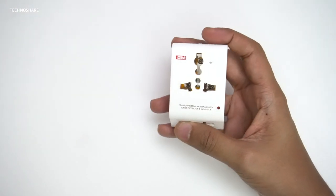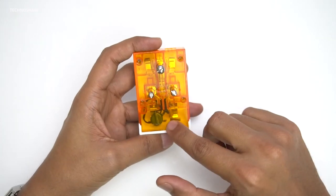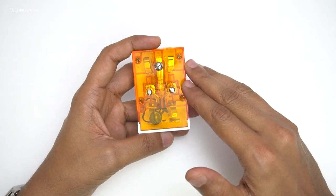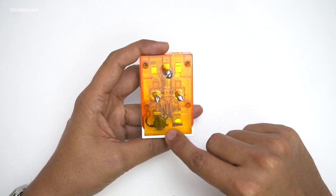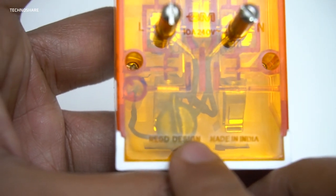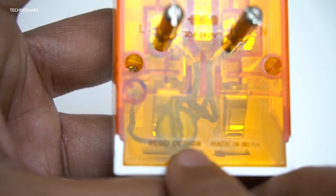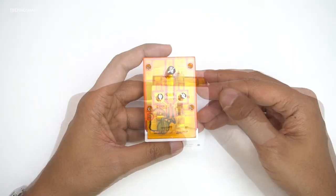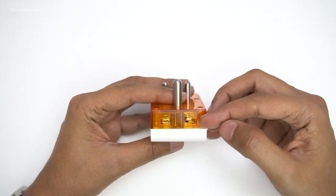The build quality again looks impressive. The back is transparent and you can see that it has got a built-in surge protector here - this is a varistor that I just explained earlier. This will offer protection against spike in voltages. This will give two additional sockets for plugging the appliances.